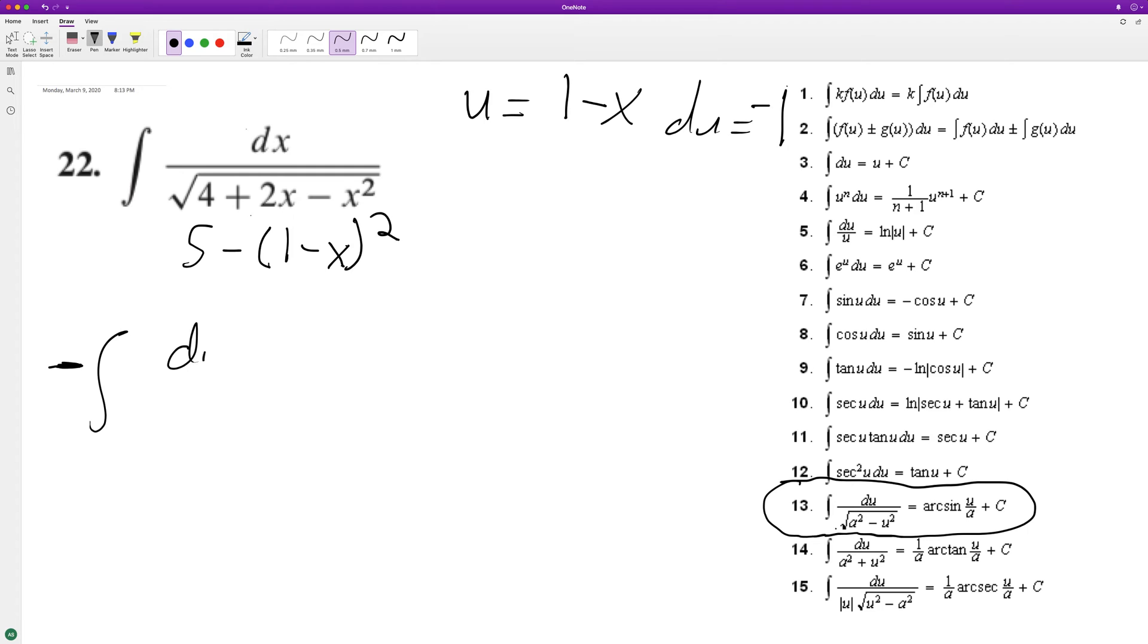And then we're going to have du, and this is going to be the square root of five minus u squared.